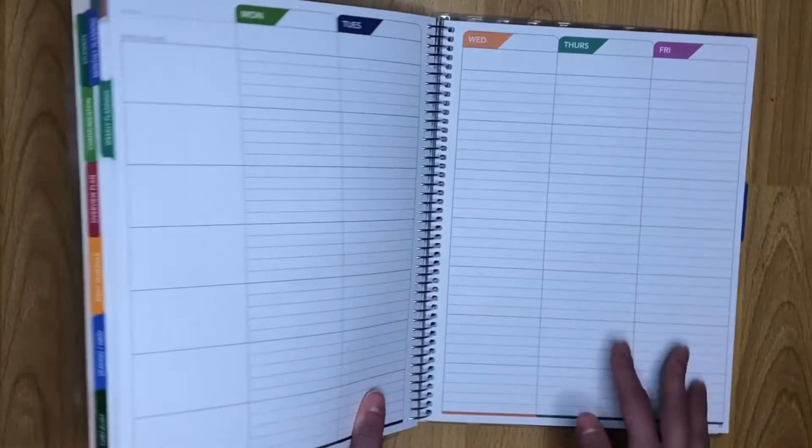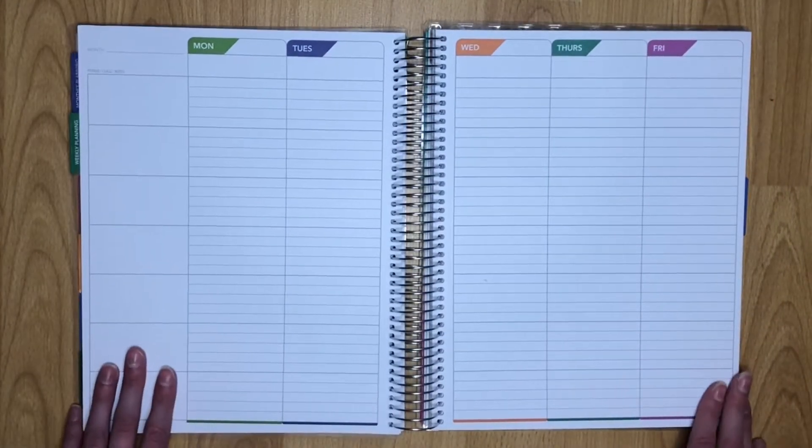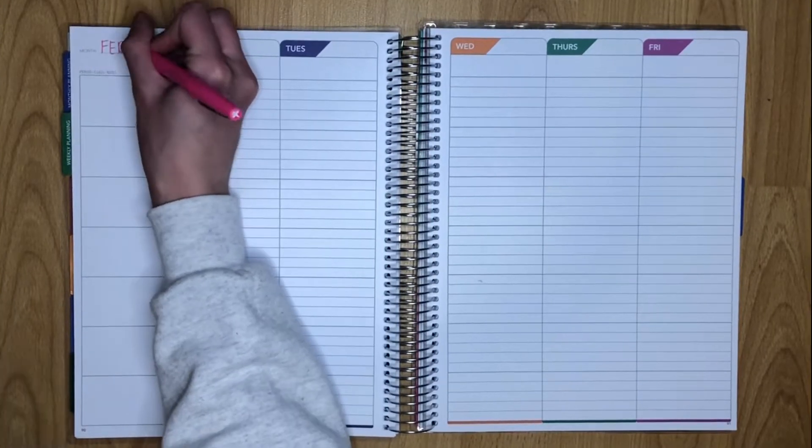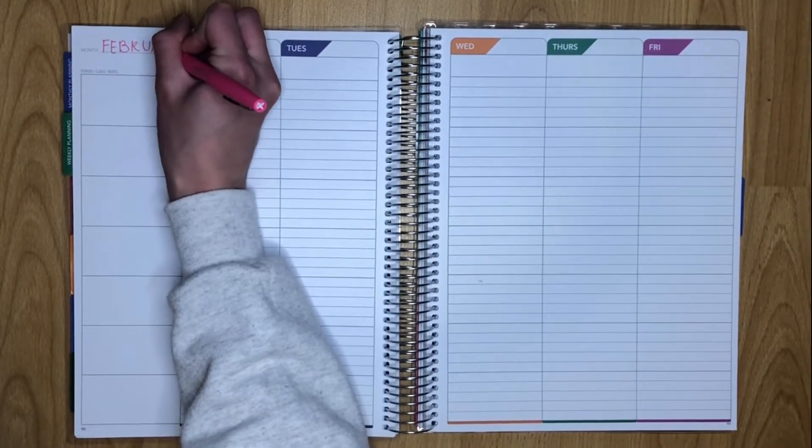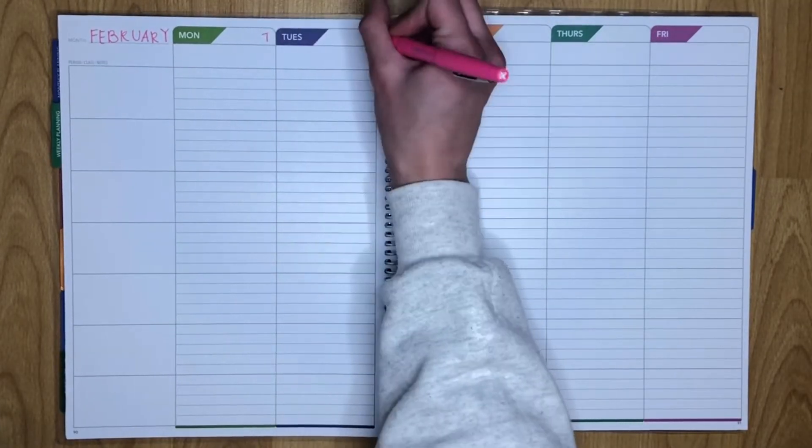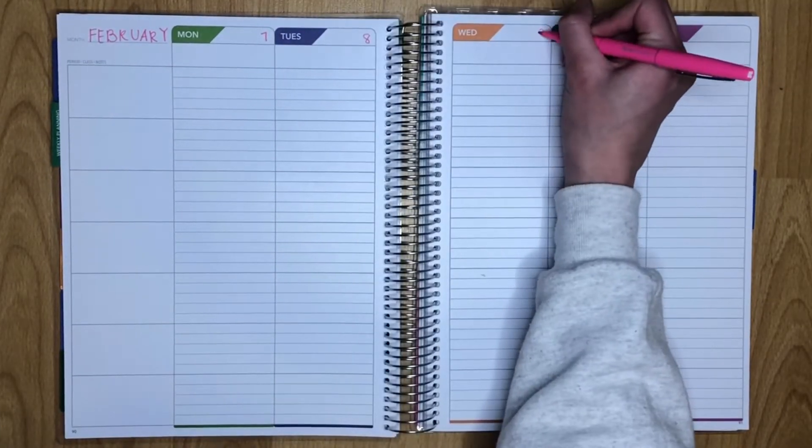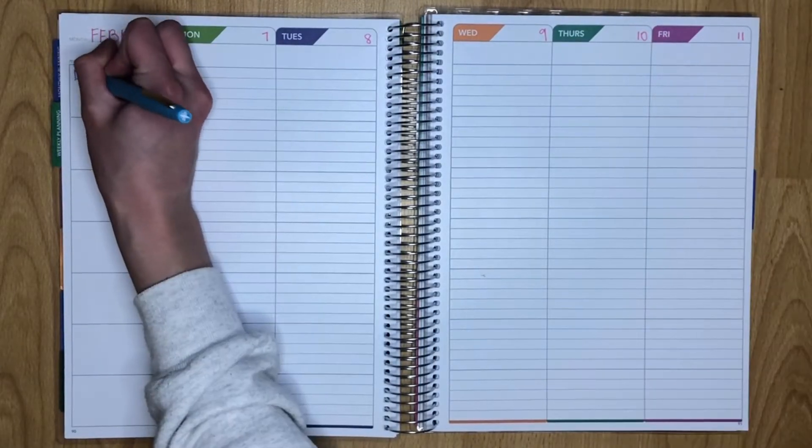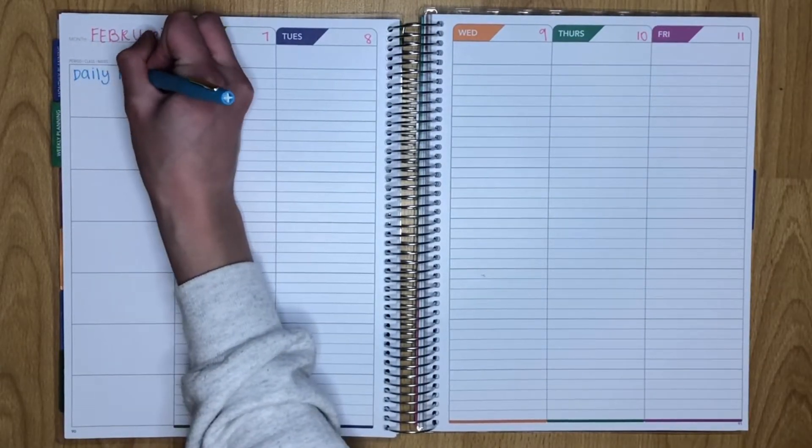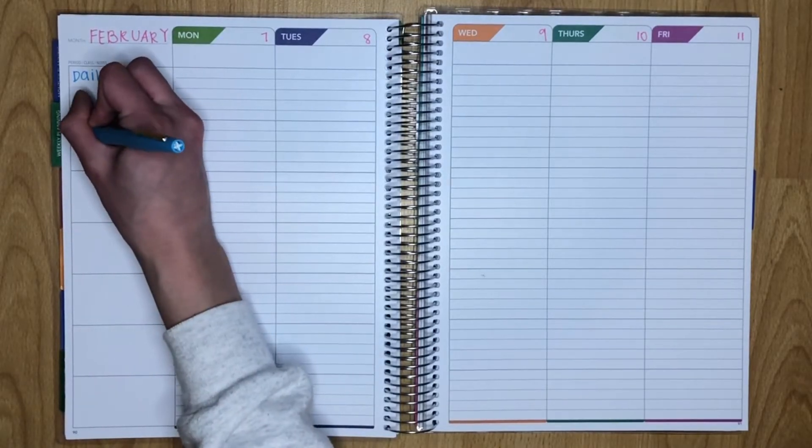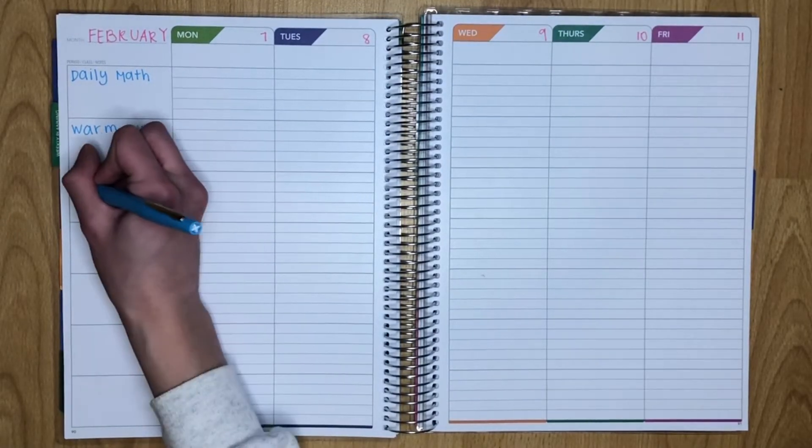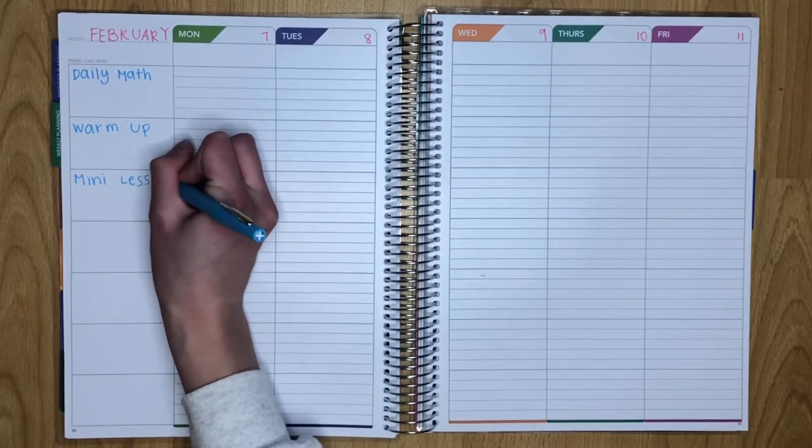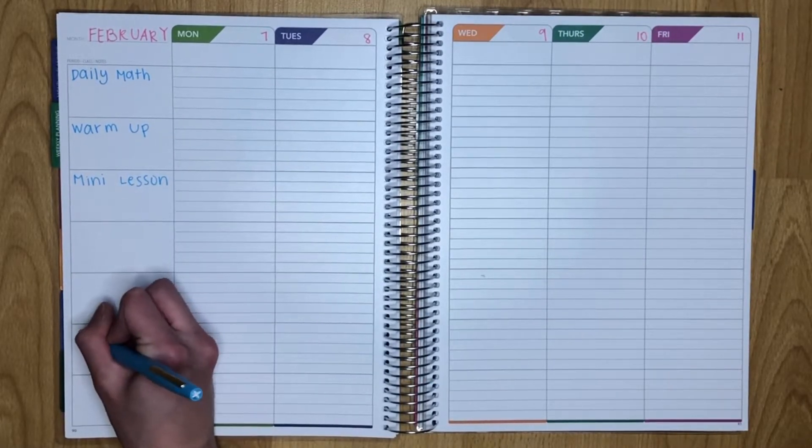So this is my lovely planner. I actually got it off of Amazon. I'll have it linked down below. When going into a week of planning, I like to first organize my planner by writing out the month and then each day for the week. And then I'm specifically going to be planning out math with you guys. So I will write in the different aspects of my math block that I like to teach. This includes daily math, warm-up, a mini lesson, and then center time.